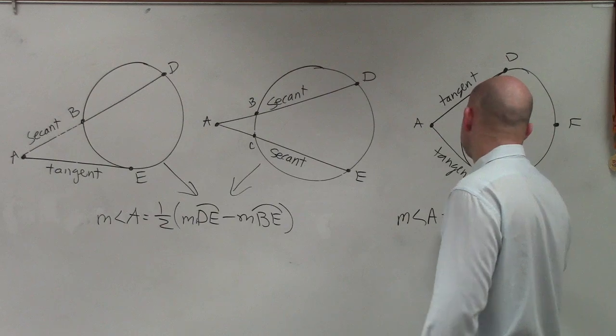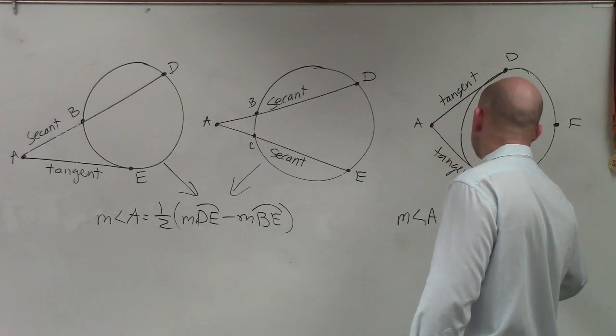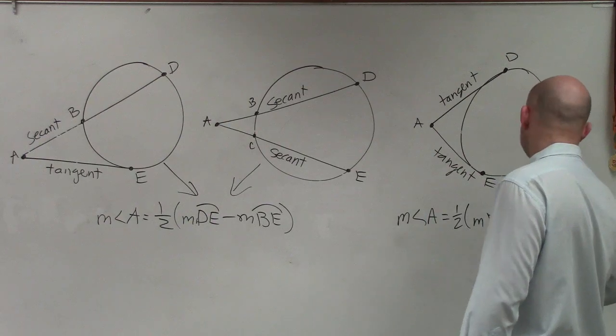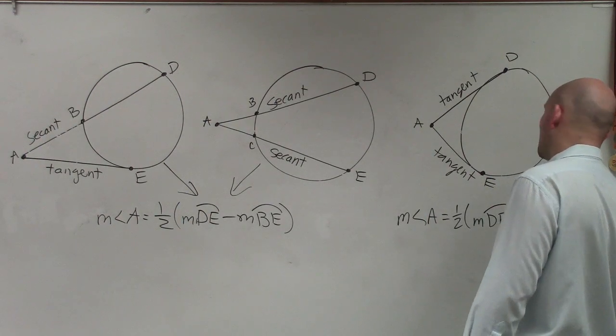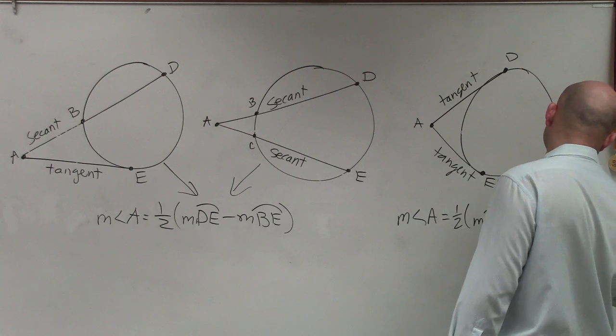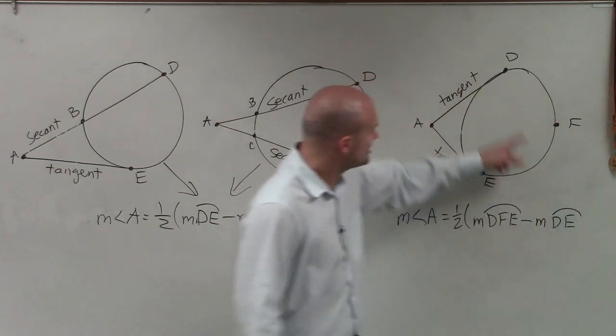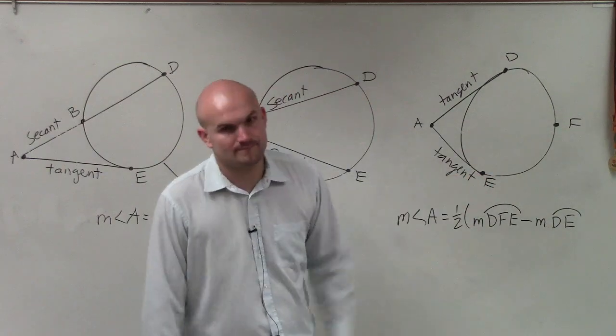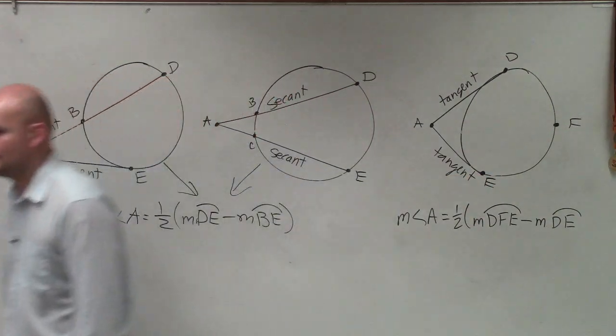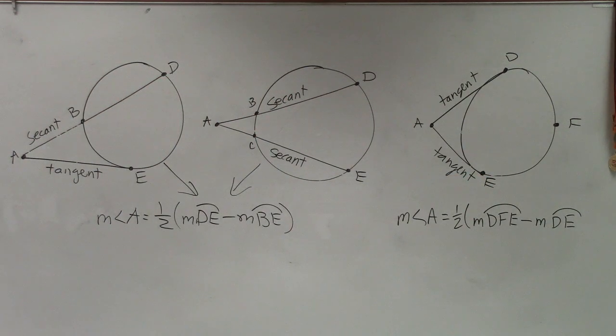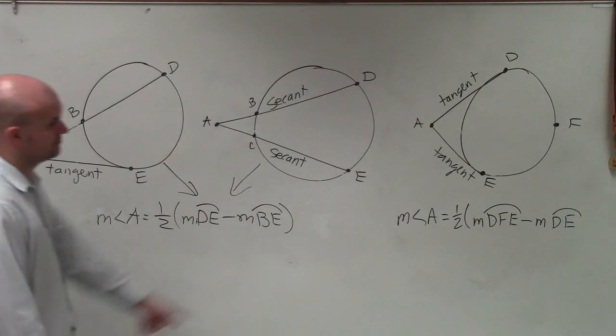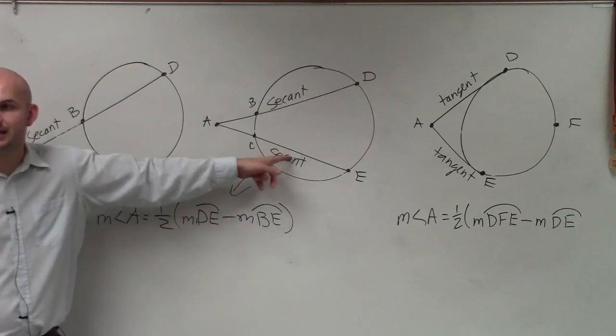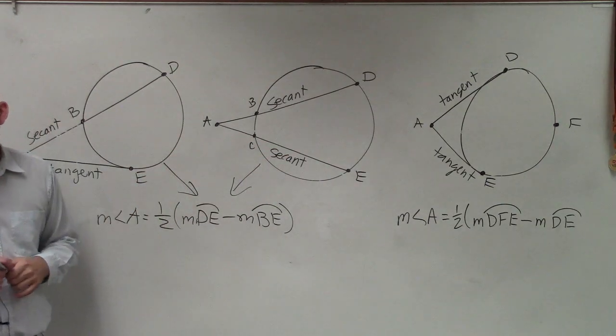Measure of angle A is equal to one half the measure of arc DFE minus the measure of my arc DE, where the arc DE is from here to here, and DFE is from here to there. OK? Yes? That one's for that one. This one is the same for both of those two. OK?